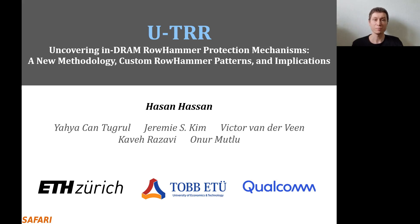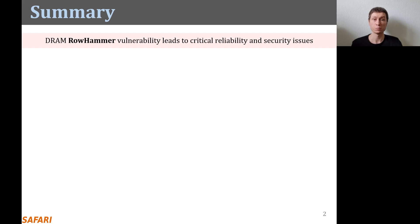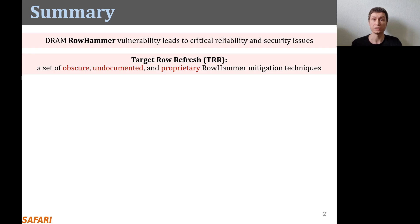Hi, my name is Hasan. I'll be presenting our work on uncovering the operation of in-DRAM RowHammer protection mechanisms. The RowHammer vulnerability of modern DRAM is a critical reliability and security threat. Today, DRAM vendors implement target row refresh, or TRR, in their DRAM chips. TRR is an obscure, undocumented, and proprietary RowHammer mitigation technique.